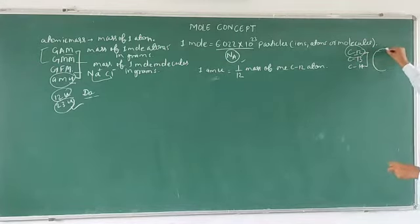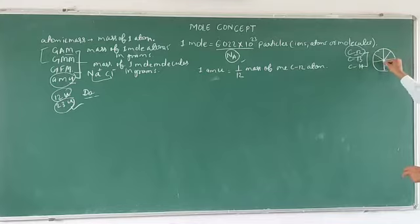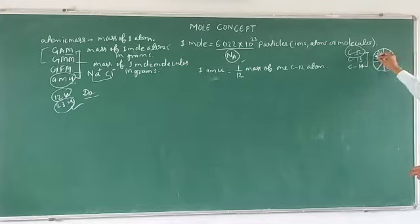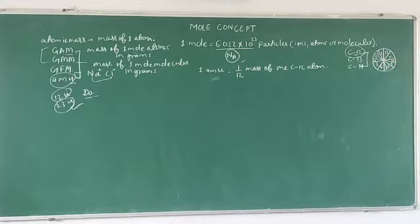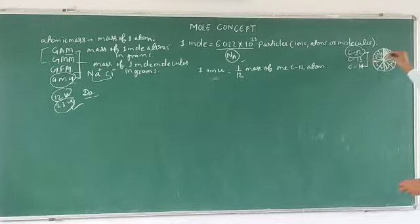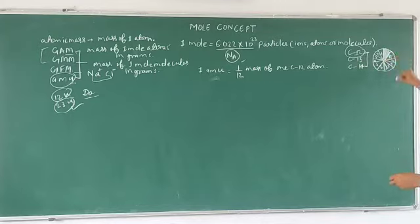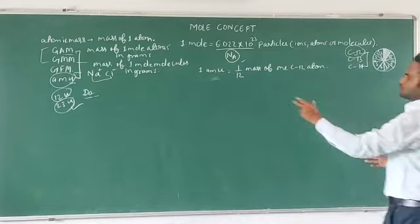Let us assume this is the mass of the carbon-12 atom. We can divide it into 12 equal parts. So let us assume all parts are equal, and we take a single part — the 12th part. Because all parts are equal, this part can serve as the standard for atomic mass unit. So 1 atomic mass unit is 1/12th of the mass of the carbon-12 atom.